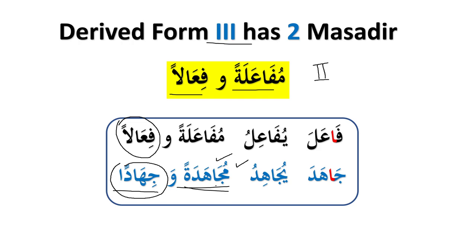For example, you might hear the word نِفاق — نافق يُنافق مُنافقةً ونِفاق. Similarly, كِتاب: كاتب يُكاتب مُكاتبةً وكتاباً. So any word on the pattern of فِعالٌ is a مصدر of Form 3, even if it is less commonly used.